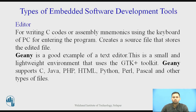Now we will see types of embedded software development tools. The first one is Editor. For writing C code or assembly mnemonics using the keyboard of a personal computer, we use an editor which creates a source file. JNE is a good example of a text editor — it is a small and lightweight environment that uses the GTK Plus Toolkit. JNE supports C, Java, PHP, HTML, Python, Perl, Pascal, and some other file types.